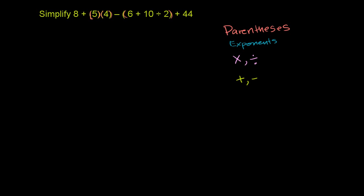So let's apply it over here. Let me rewrite this whole expression. So it's 8 plus 5 times 4 minus, in parentheses, 6 plus 10 divided by 2 plus 44.